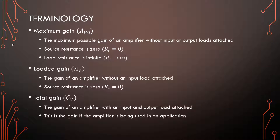We have three kinds of gains that will typically be described. The first is the maximum gain, which is the absolute maximum gain an amplifier can achieve. This is when the load is infinite and the source resistance is zero — so on the output side there is technically nothing, and on the input side there is only a source driving the amplifier with no impedance of its own.